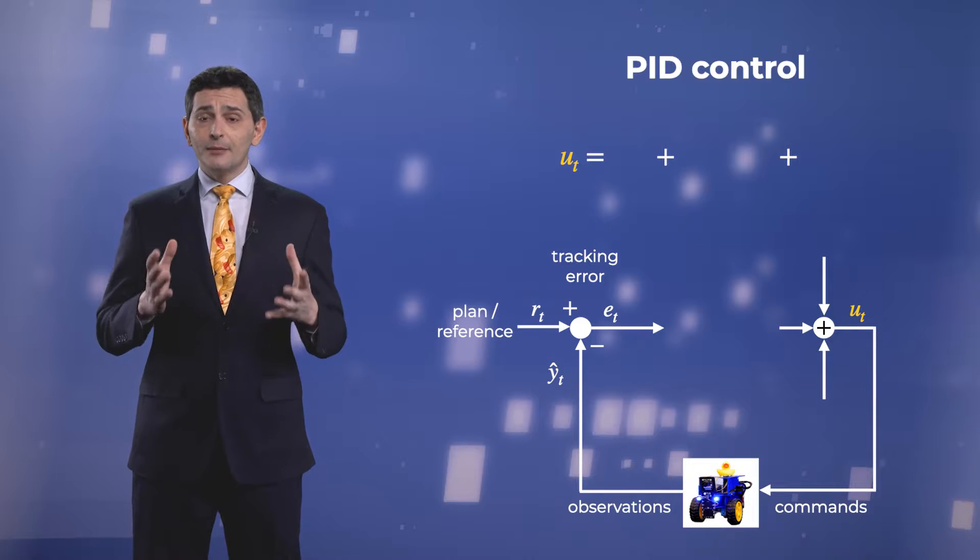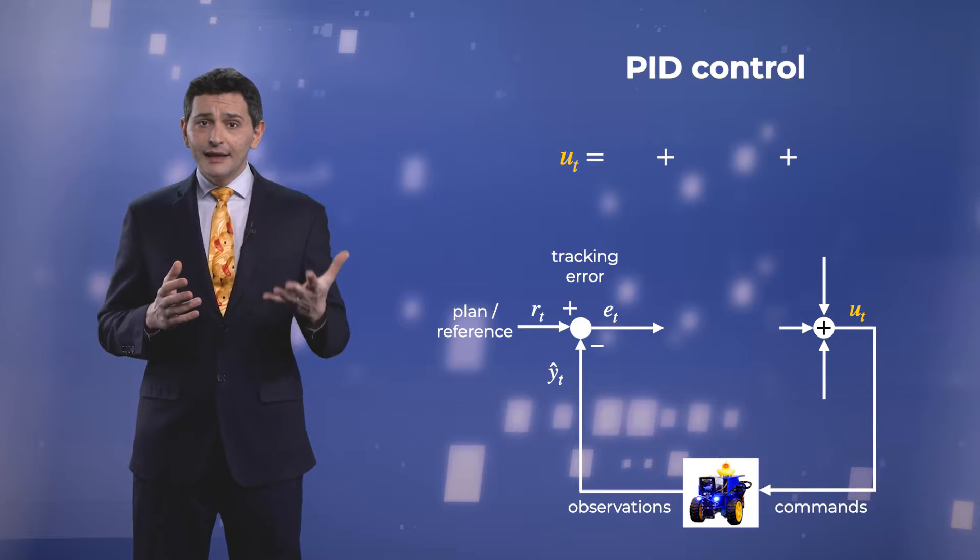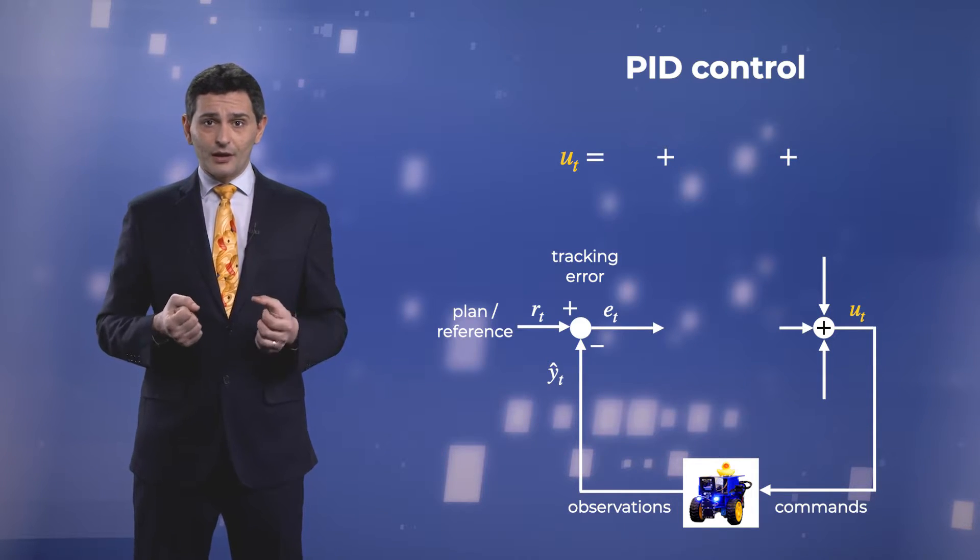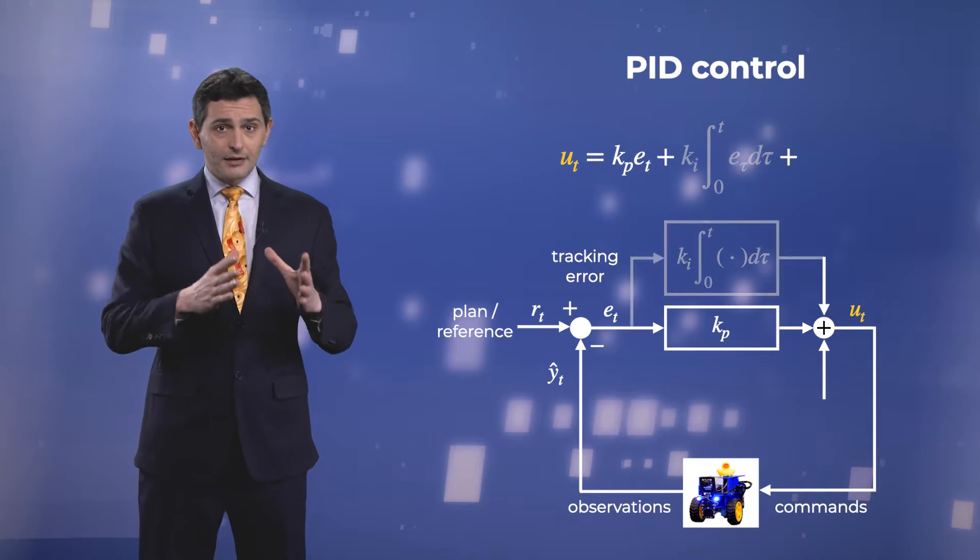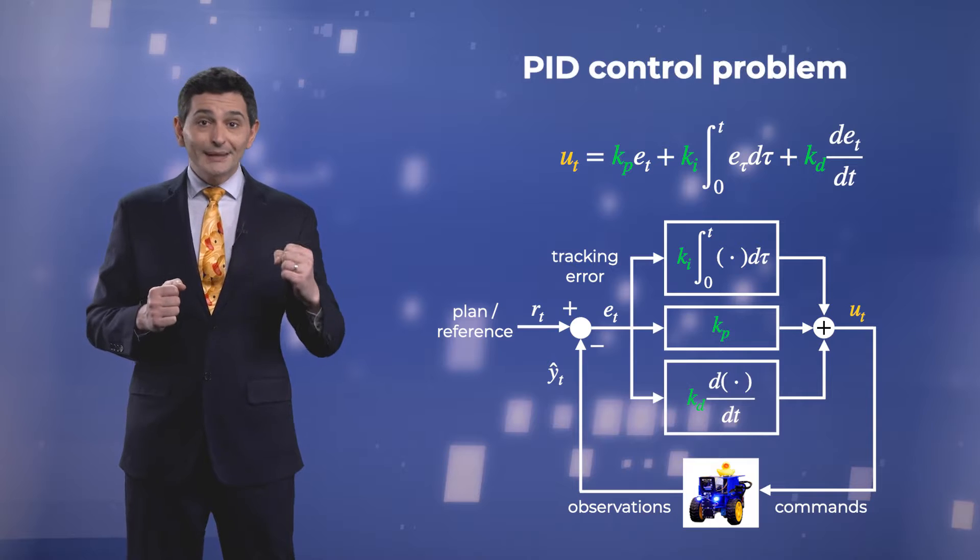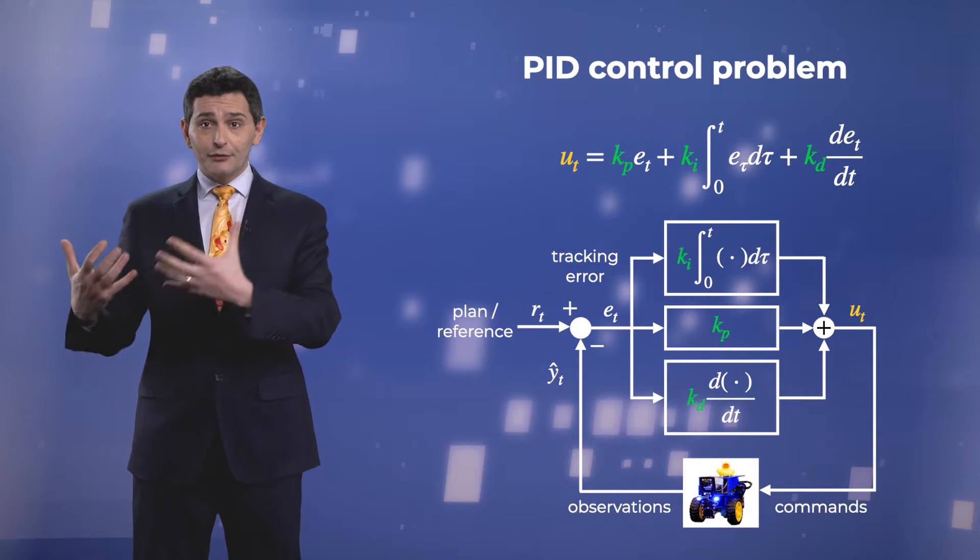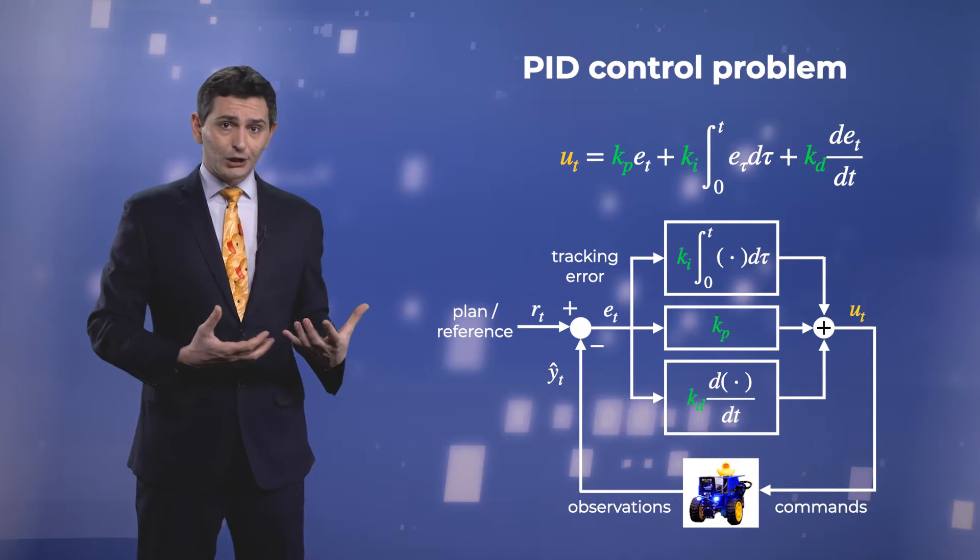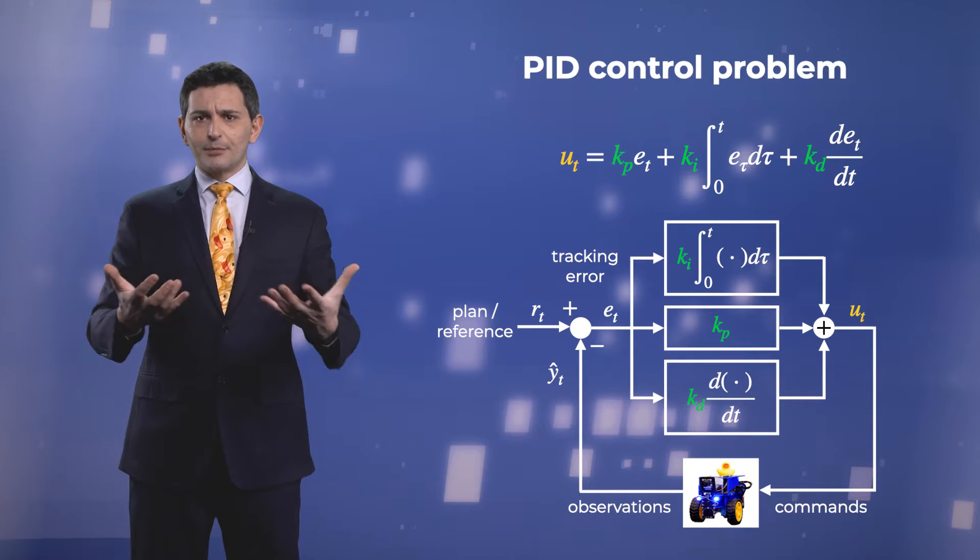In PID, the command signal is made of the linear combination of three signals: the tracking error, its integral, and its derivative. The PID design problem is to determine the three coefficients of the linear combination so to achieve satisfactory performance.